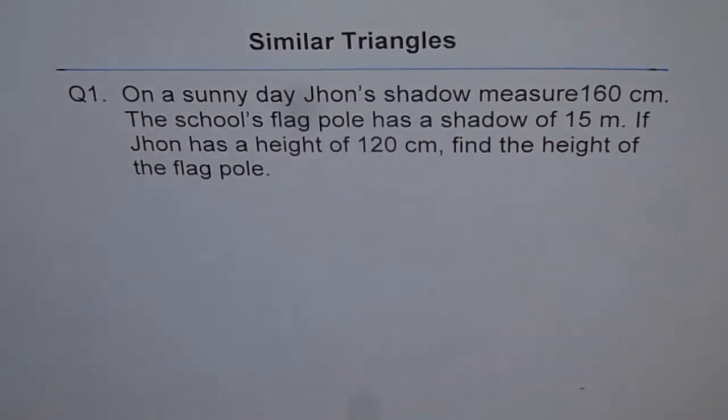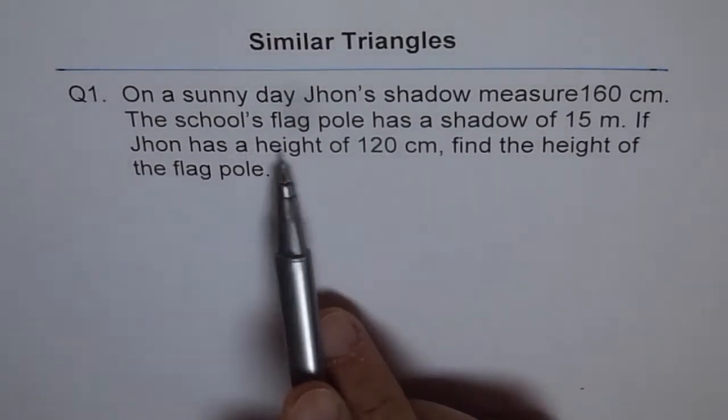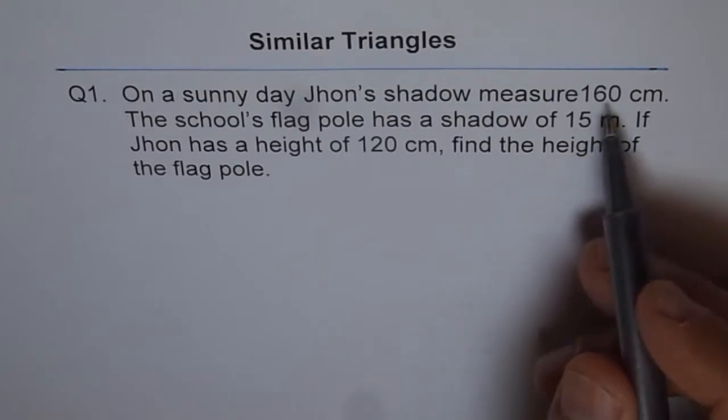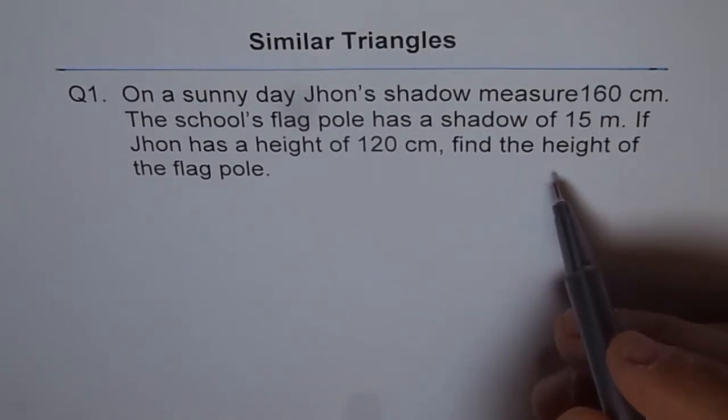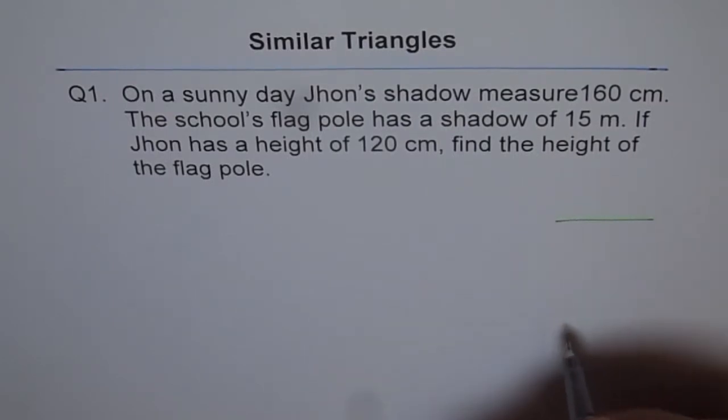So we will use similar triangle's concept to solve this problem. Let's sketch the two triangles, one for John's shadow and the other one for school's flag. So remember one thing, we are measuring these shadows at the same time. So angle of elevation for the Sun is same for John and for the flag. So that part we have to kind of assume, okay?